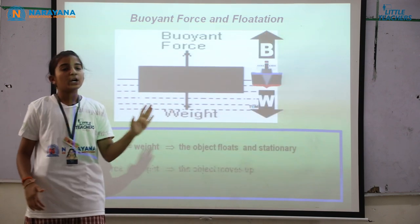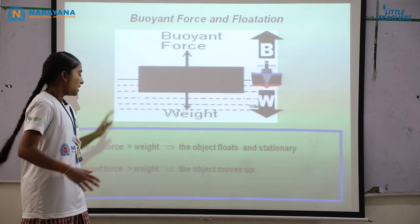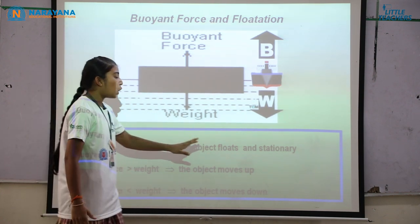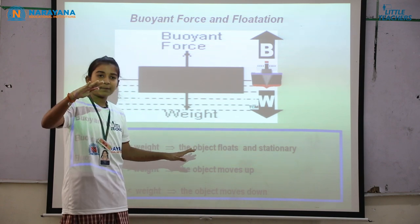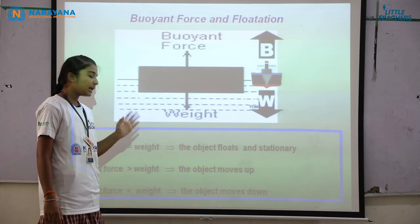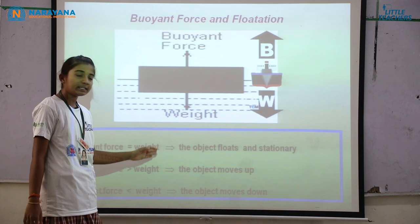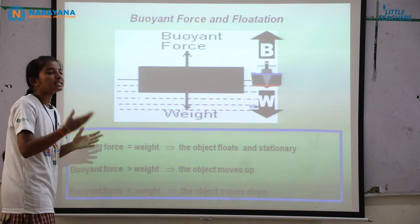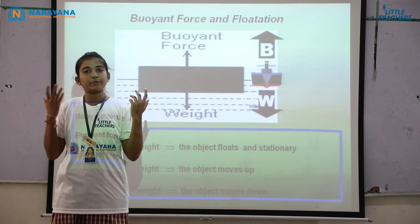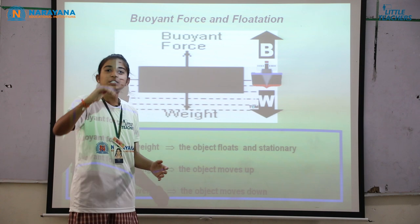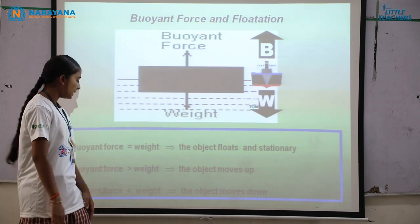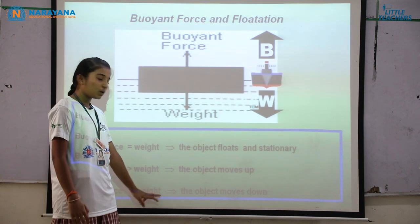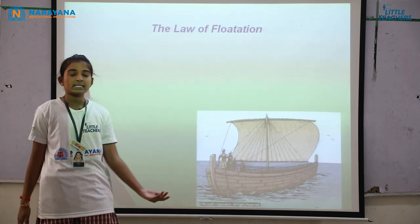Buoyant force is also divided into three types. When the buoyant force is greater than the weight of the object, the object moves up and floats completely above the liquid surface. When buoyant force equals the weight of the object, the object floats and remains stationary. When buoyant force is less than the weight of the object, the object moves down and sinks.